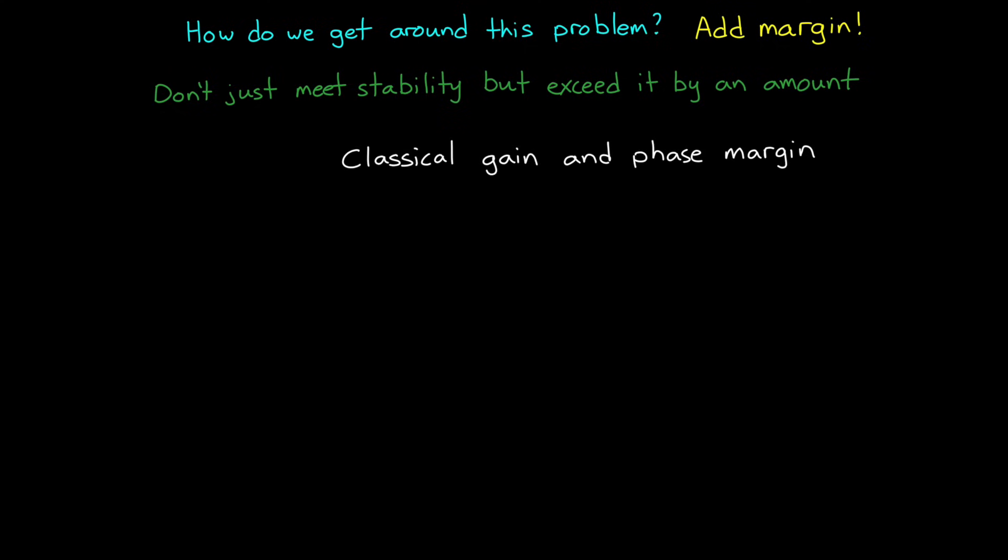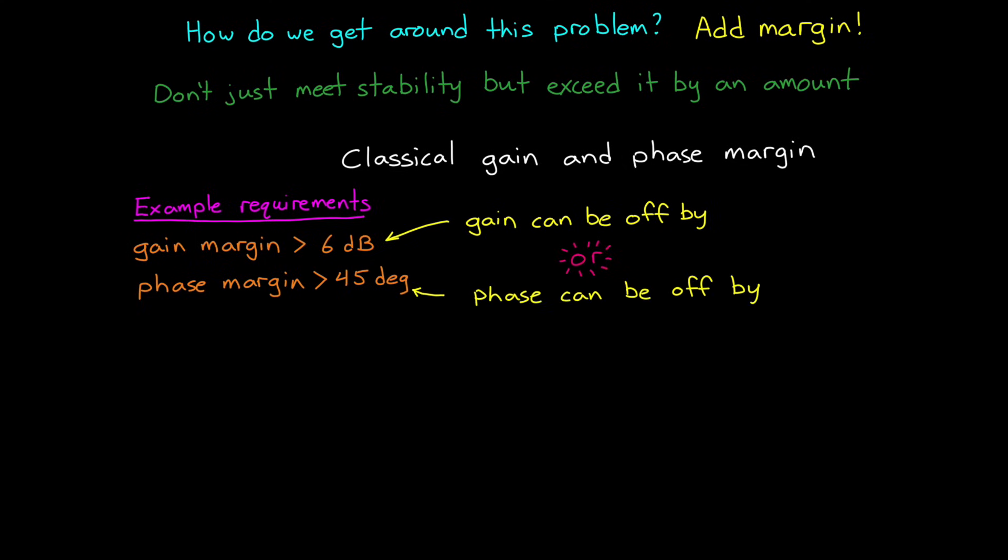If you're familiar with the classical gain and phase margins, this is exactly what they are for. You may have a requirement that says gain margin must be more than 6 decibels and phase margin must be greater than 45 degrees at some critical frequency or frequencies. And what this is saying is that you have to design your controller in a way that the real system will still be stable even if the gain is up to 6 dB higher than your model claims,